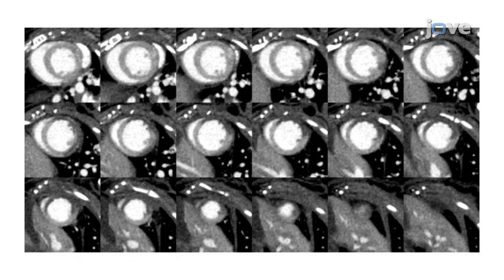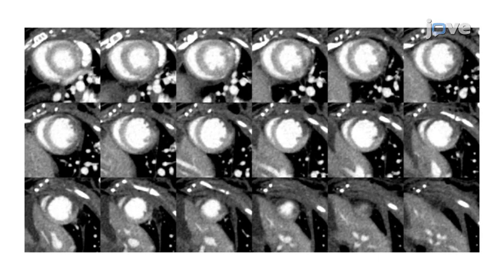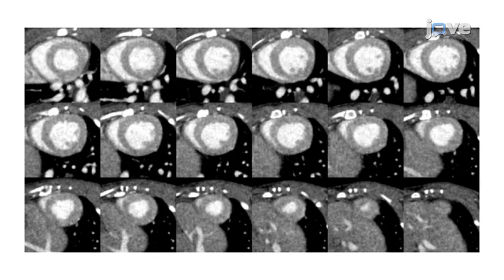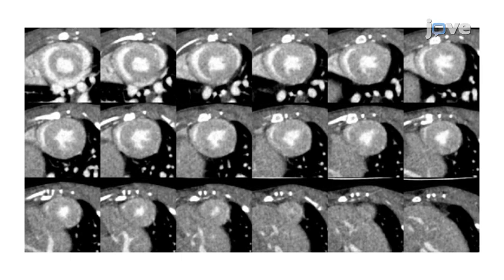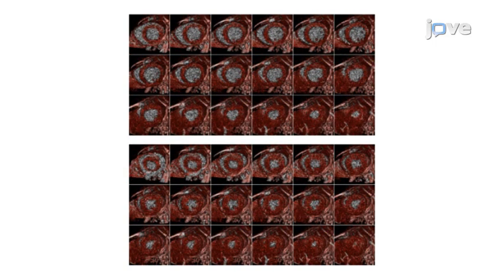Here, representative blood pool short axial end diastolic and end systolic cross sections of a mouse heart with a myocardial infarction are shown. Short axial end diastolic and end systolic cross sections of a mouse heart without myocardial infarction exhibit excellent left ventricular cavity delineation with little background noise. Note how the areas of contrast rarefaction, corresponding to the myocardial infarction, were well demarcated on the short axial images of the mouse heart subjected to left anterior descending coronary artery ligation, but not in the sham operated animal.